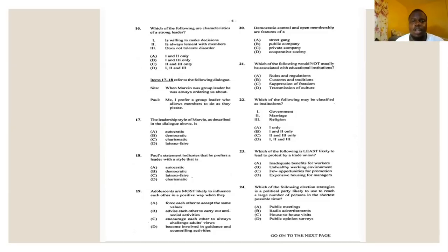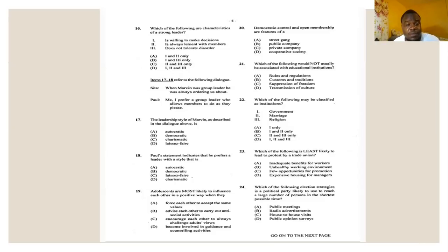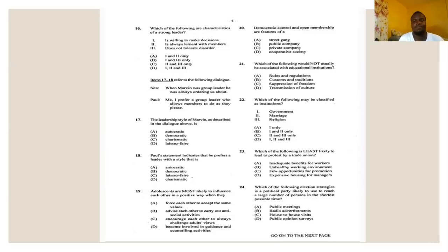Numbers seventeen and eighteen refer to the following dialogue. Masita says: 'When Marvin was group leader he was always ordering us about.' Paul says: 'Me, I prefer a group leader who allows members to do as they please.' Number seventeen asks about Marvin's leadership style. Someone who orders people around is autocratic. The answer for number seventeen is A — autocratic.